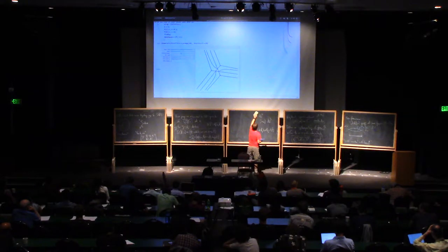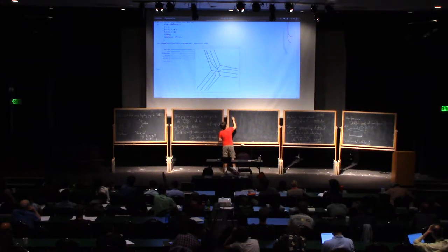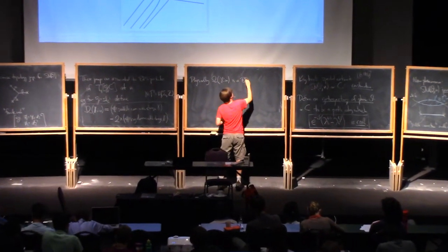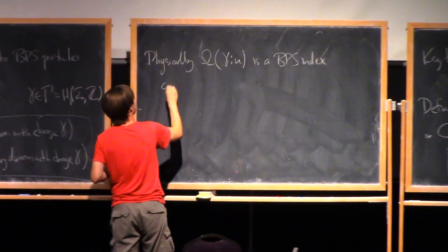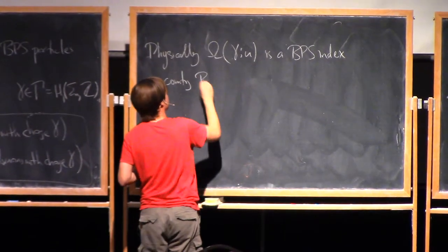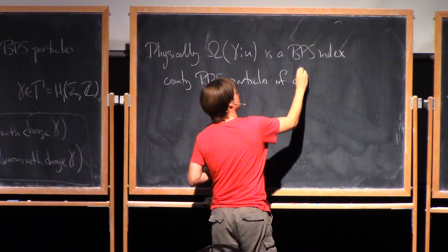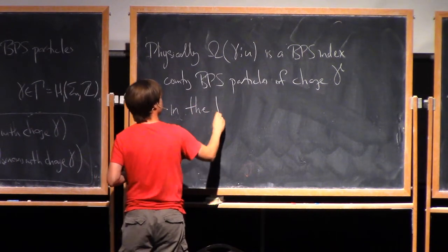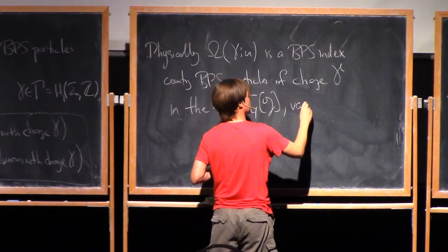So physically this quantity, omega of gamma of U, is a BPS index counting BPS particles of charge gamma in the theory T4 of G in vacuum U.